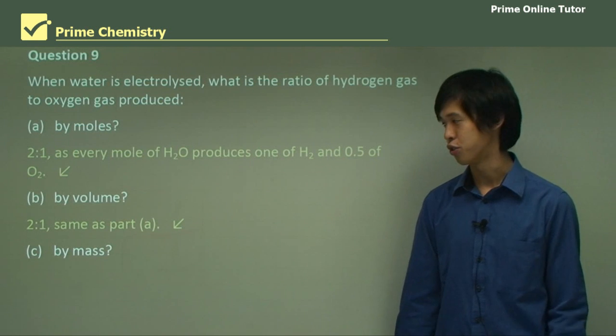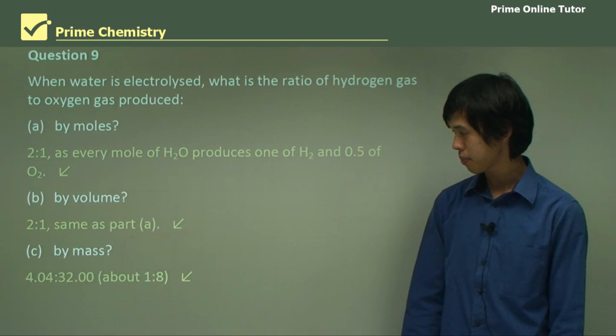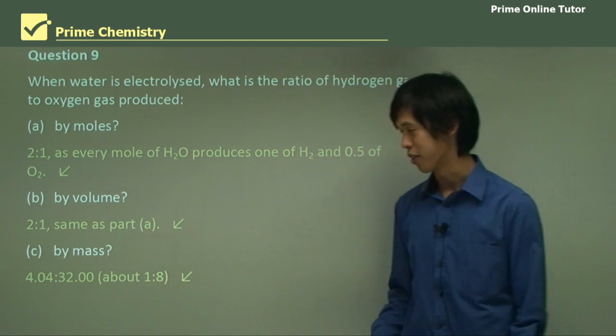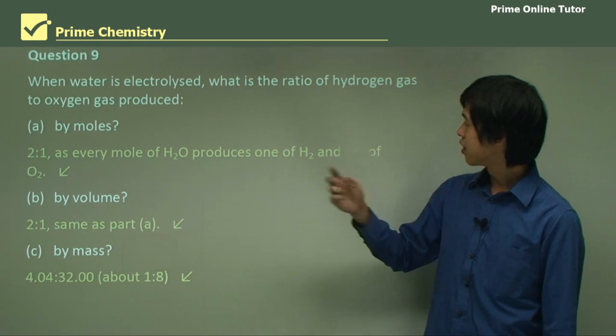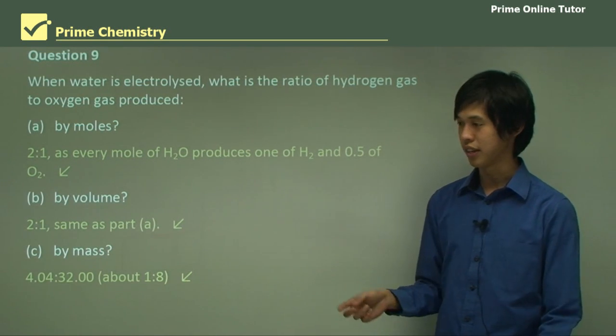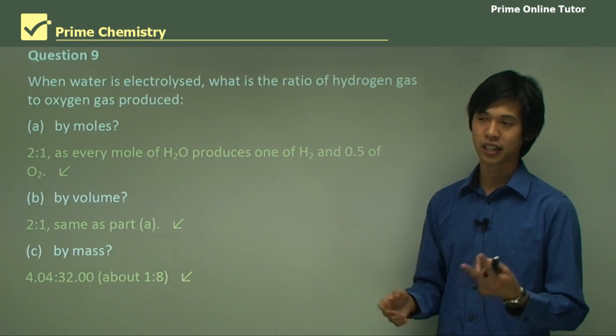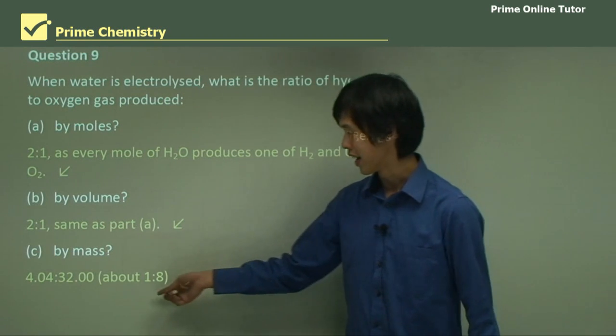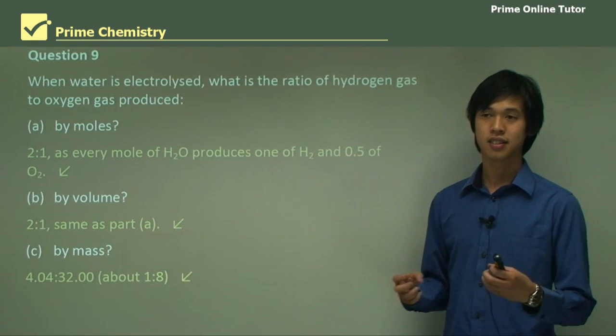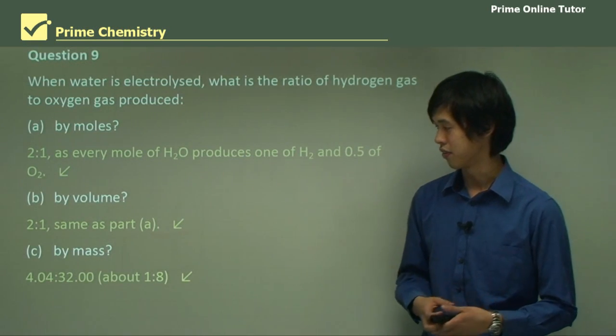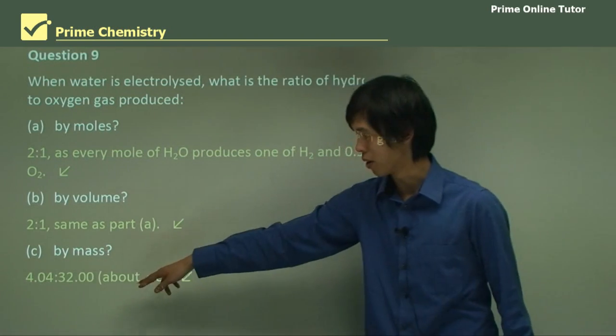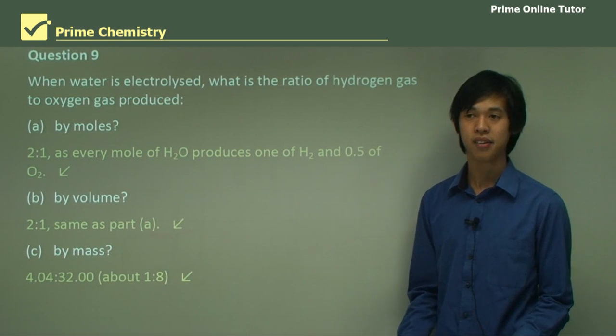And by mass, now this is the tricky one. So it's about 1 to 8 or 4.04 to 32. You can see hydrogen gas is very light, it's about 2 kilograms per mole, and you produce twice as many. Whereas oxygen gas is about 32. So you've got 2 moles of hydrogen to 1 mole of oxygen, so it's about 1 to 8 by mass.